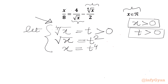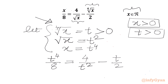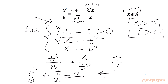Let us apply these values to our equation. x over 8 becomes t to the power 4 over 8, equal to 4 over square root x — which is t squared — minus 4th root of x — which is t — over 2. Now adding t to the power 4 over 2 to both sides gives t⁴ over 8 plus t over 2 equal to 4 over t squared.